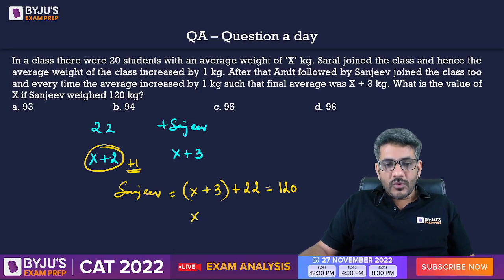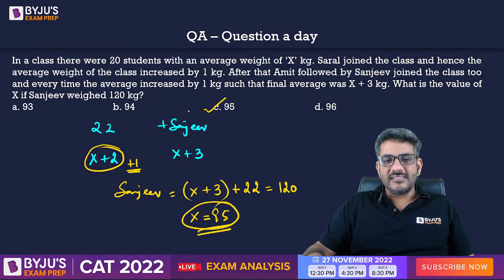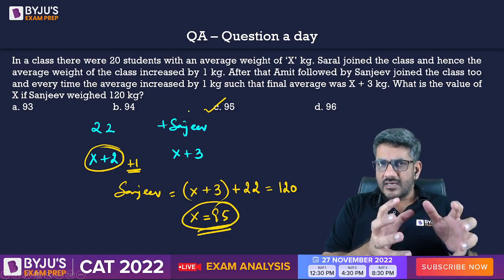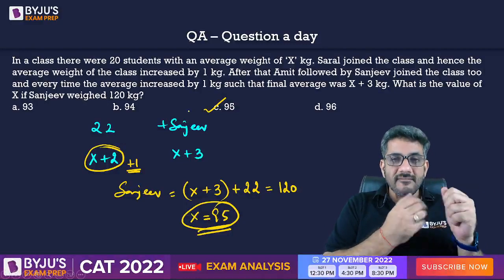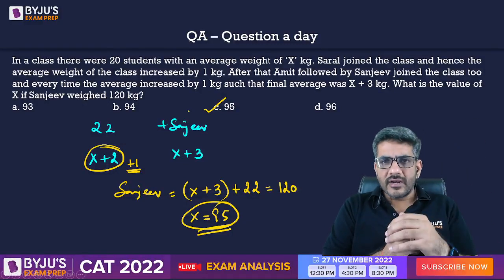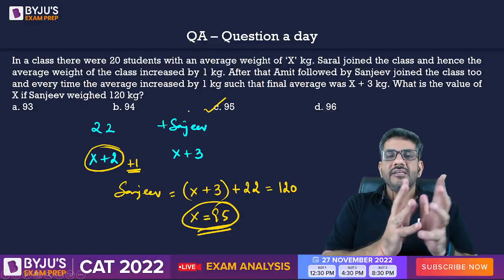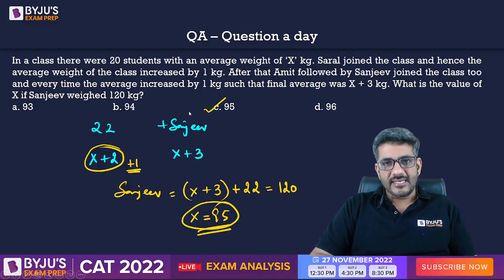Right? That means what is x? x is 95. And that is a simple way of solving the question which says c is the correct answer. Once again, let me tell you, deliberately I am taking the figures a little easier. Otherwise, if it was not 22, it was 227, or if it was not 120, it was 249, something like that, these deviation things become easier rather than going by the formula. You should always try this. Okay?